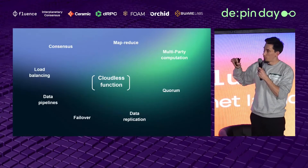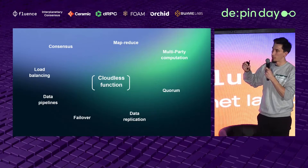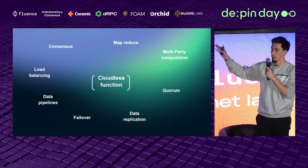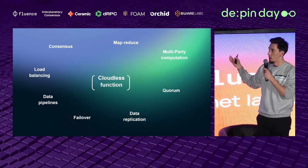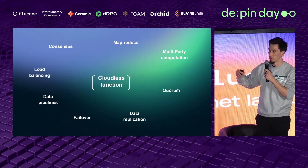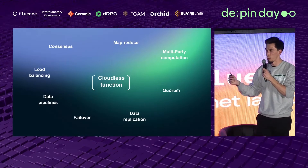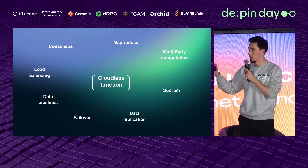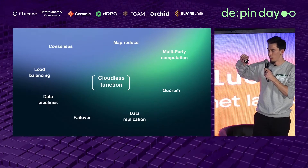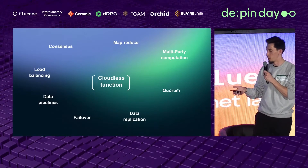Examples of distributed systems that can be expressed as cloudless functions include virtually any distributed system — from simple things like MapReduce and failover algorithms to more comprehensive permissionless consensus and multiparty computations with threshold signatures. All of these are distributed systems, network algorithms, and coordination protocols between different agents. All of this can be expressed as cloudless functions, which besides distributed execution also include computations that happen within individual peers.